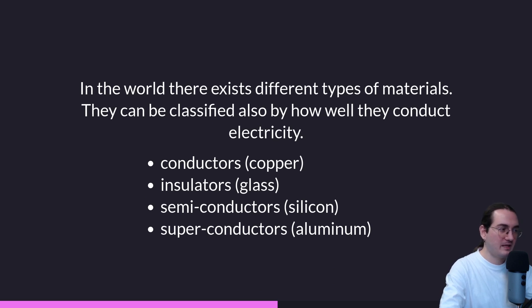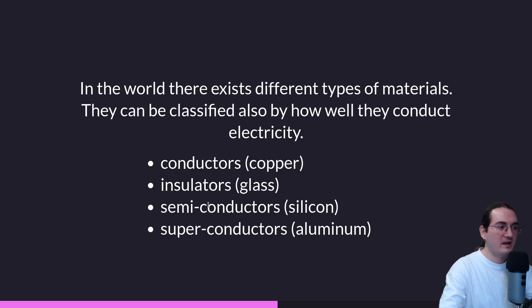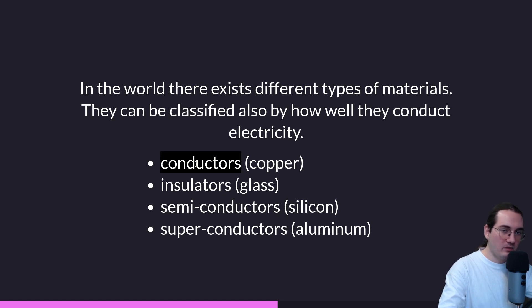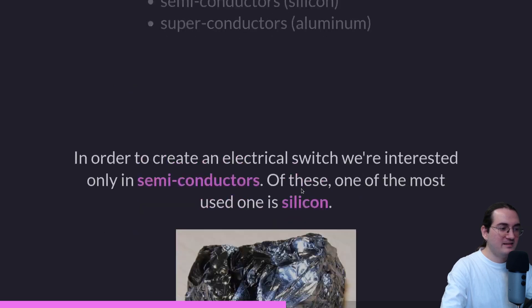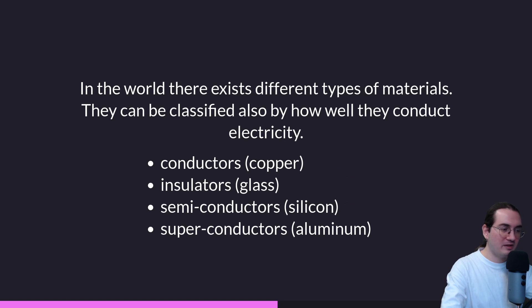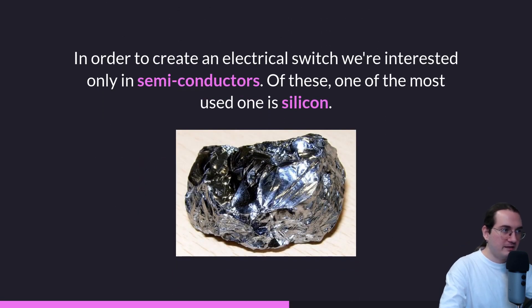In the world there exist different types of materials. In our case, to understand computers, we are interested in their classification by how they conduct electricity. We can have four types: conductors, insulators, semiconductors, and superconductors. Conductors allow the flow of electrons and pose no resistance; insulators stop the flow of electrons. Semiconductors sit between conductors and insulators — they sometimes allow electrons to flow and sometimes block them.